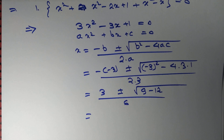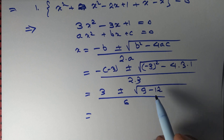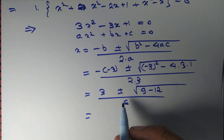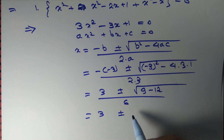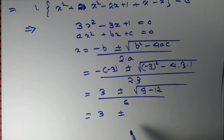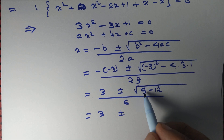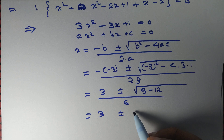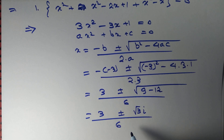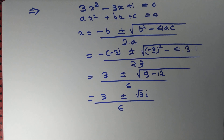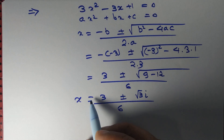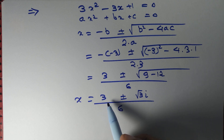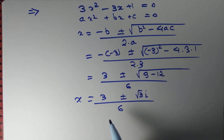That gives us 3 plus minus root over 9 minus 12, divided by 6. If you restrict yourself to the set of real numbers, of course you have no real solution. But if we allow complex numbers as well, then 9 minus 12 is minus 3, so this is equal to root 3 i by 6. So we get two solutions: x equal to 3 plus minus root 3 i, divided by 6.